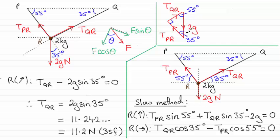Now, if you use the triangle of forces, then you could use either the 35 degree angle or the 55 degree angle. Let's suppose you use the 35 degree angle. Then the force that you want to find, TQR, is opposite that 35 degrees. You've got the hypotenuse, 2g,